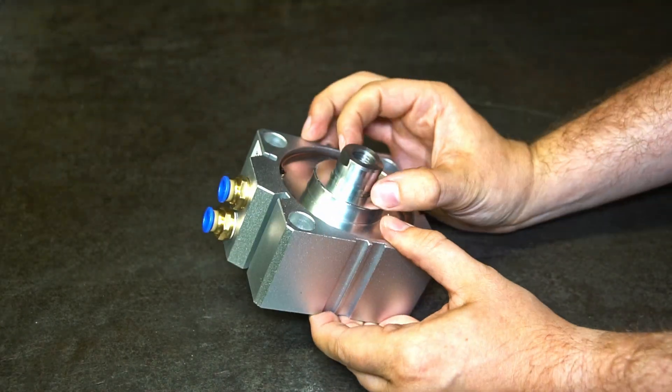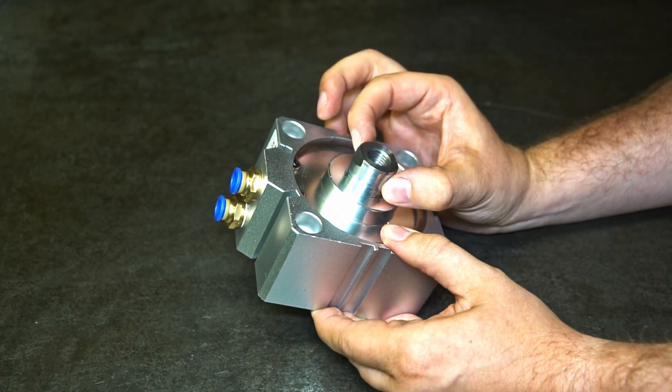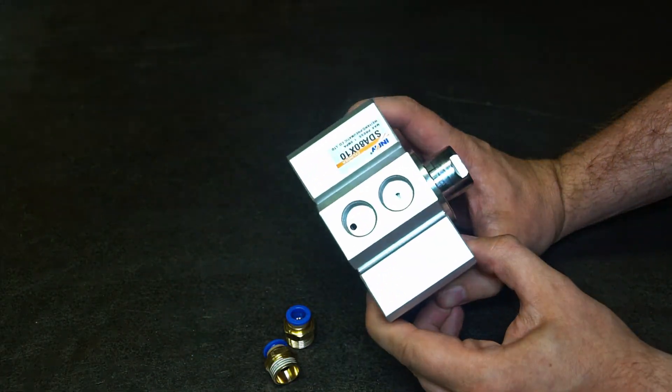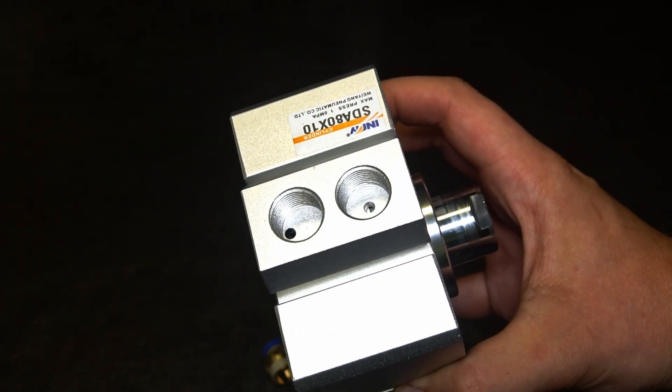At least that's true for pushing. For pulling, the force is lower because the opposite area is lower due to the piston rod. The air goes in through these holes.